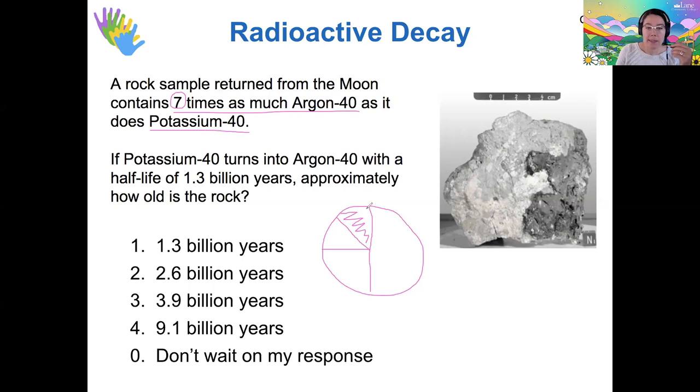So that means that if this started out as all potassium and only one-eighth is left, then half of it got taken away over the course of the first 1.3 billion years. The next quarter of the sample turned into argon-40 over the second 1.3 billion years. And then half of what was left, so that final eighth of the original sample, was converted to argon-40 over the third 1.3 billion years.